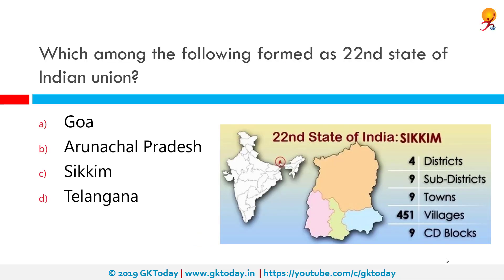Which among the following formed as the 22nd state of the Indian Union? The correct answer is Sikkim. Sikkim emerged as India's 22nd state on 26th April 1975. The Sikkim State Day is observed on 16th May every year because this was the day when the first chief minister of Sikkim assumed office.